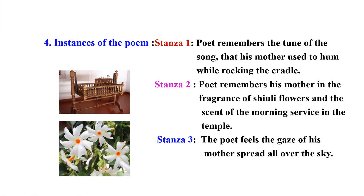The fourth point is instances of the poem — here, instances means examples. This poem is based on the theme of the poet's recollection of his mother's presence in nature. In the first stanza, the poet remembers the tune of a song that his mother used to hum while rocking the cradle. In the second stanza, the poet remembers his mother in the fragrance of shiuli flowers and the scent of the morning service in the temple. In the third stanza, the poet feels the gaze of his mother spread all over the sky.